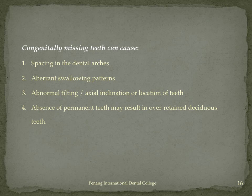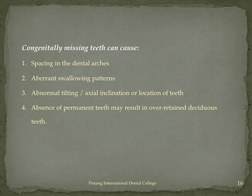Congenital missing teeth can lead to many problems. A missing tooth means spacing, and to create an oral seal for swallowing there will be high chances of tongue thrusting and aberrant swallowing patterns. A missing tooth also means adjacent teeth will show mesial drift and axial inclination will change as they try to close the space. Space maintenance or orthodontic treatment may be needed. Absence of a permanent tooth may also result in over-retained deciduous teeth, since without a permanent tooth, no root resorption occurs.